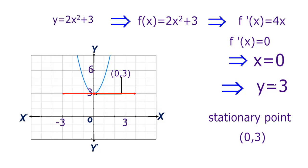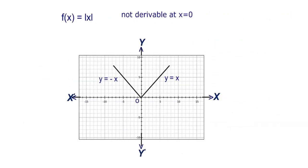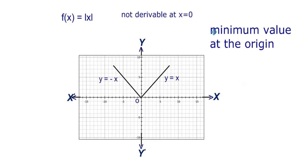Now we will see a counter-example, that is, a function where it does not have any stationary points. This is the absolute value function: f(x) equal to |x|. Clearly, this function is not derivable at x equal to 0, though the minimum point of the function is at the origin. Therefore, we can say that this function has no stationary points.